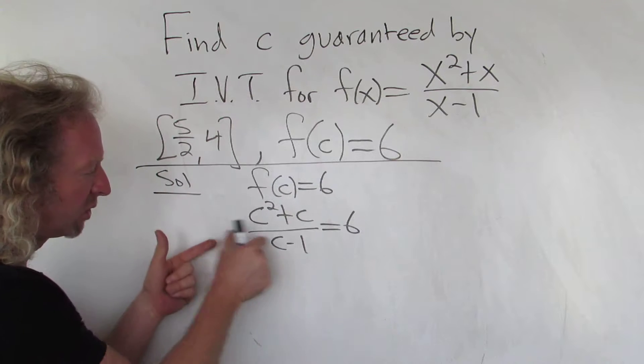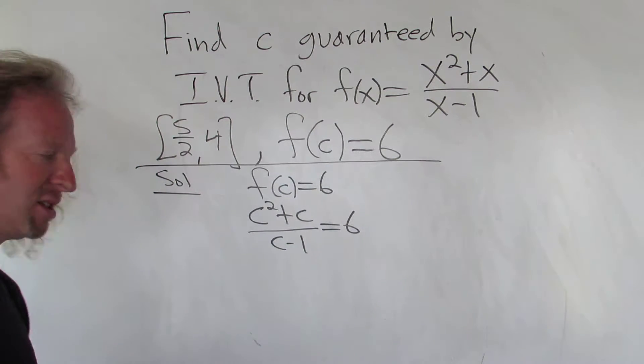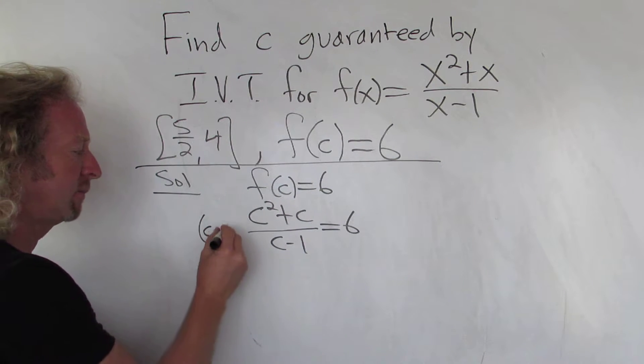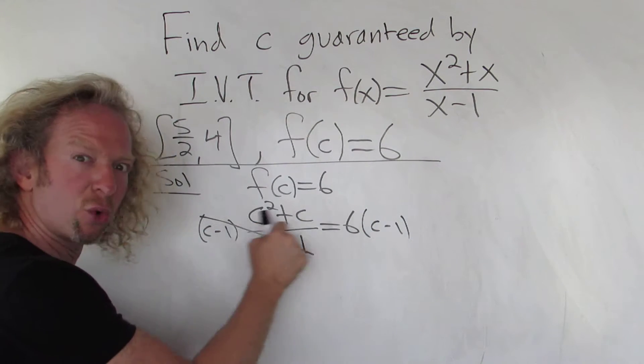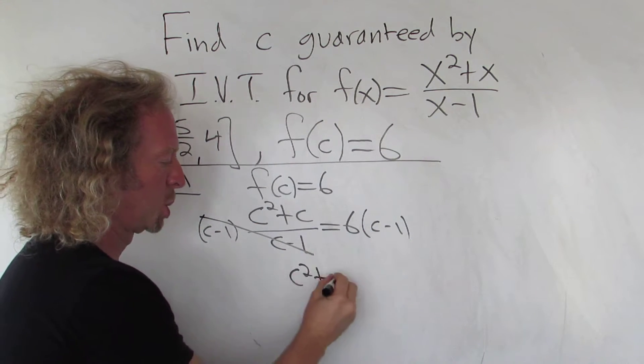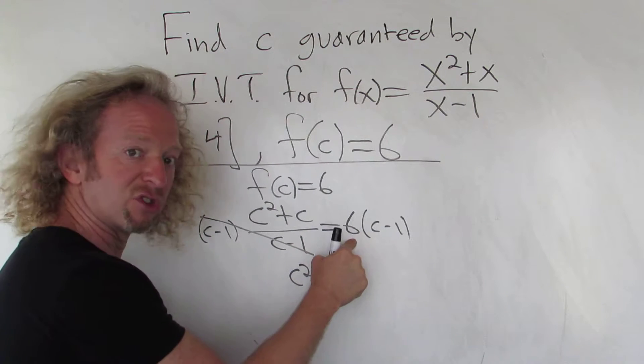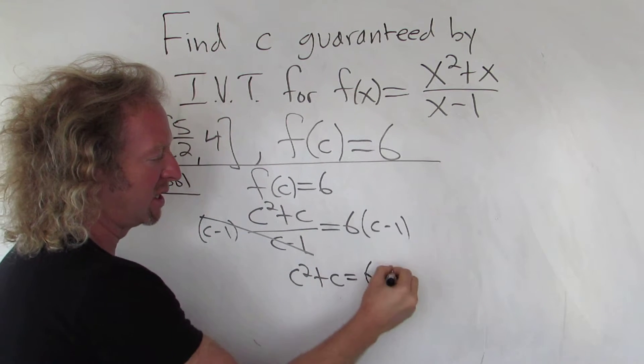Now we have to solve for C. So to clear the fraction, maybe we can multiply by C minus 1. These cancel. Boom. So we get C squared plus C equals, then distribute to 6. 6C minus 6.